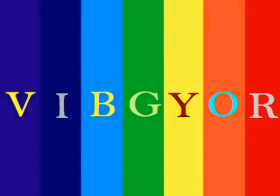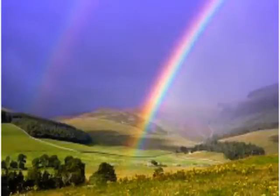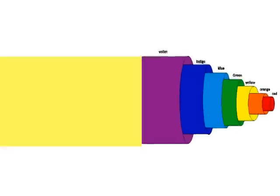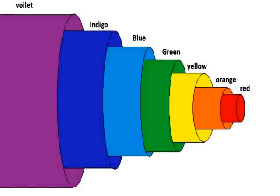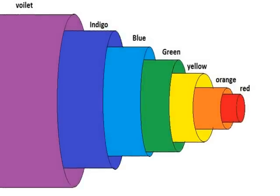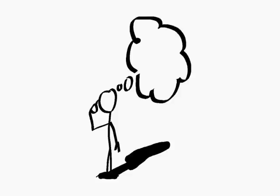We all are familiar with VIBGYOR. VIBGYOR has 7 colors of the rainbow, and let us assume that light is made of 7 concentric pipes. As you know, light is made of 7 colors, but the outermost pipe is violet and innermost is red.